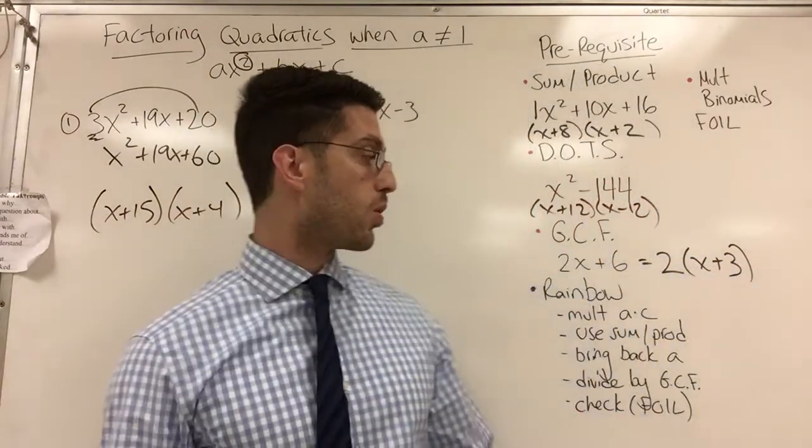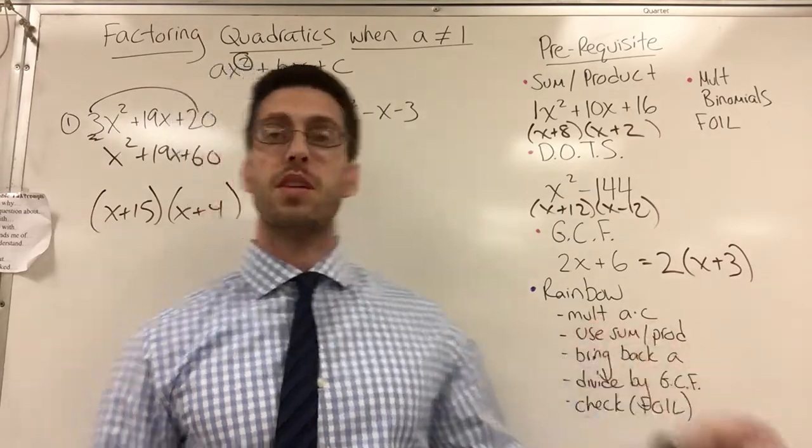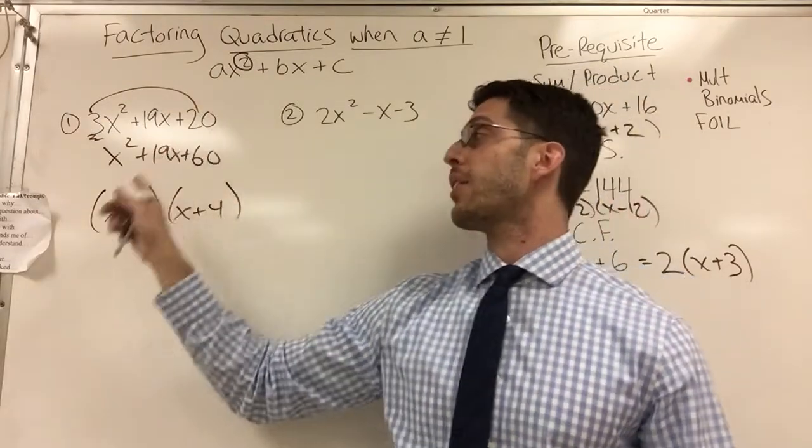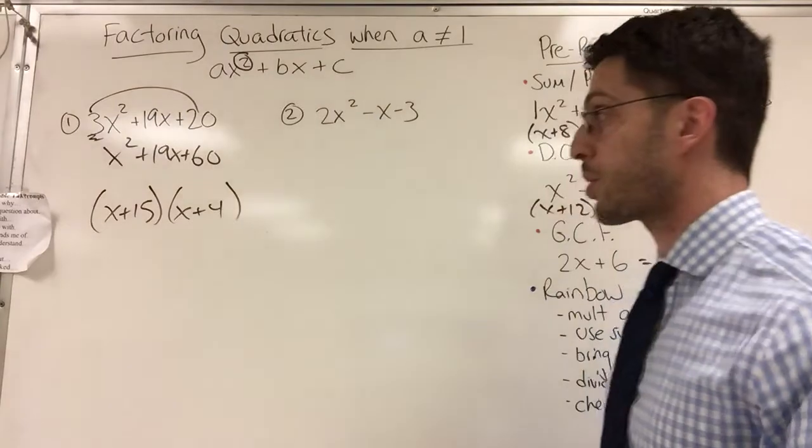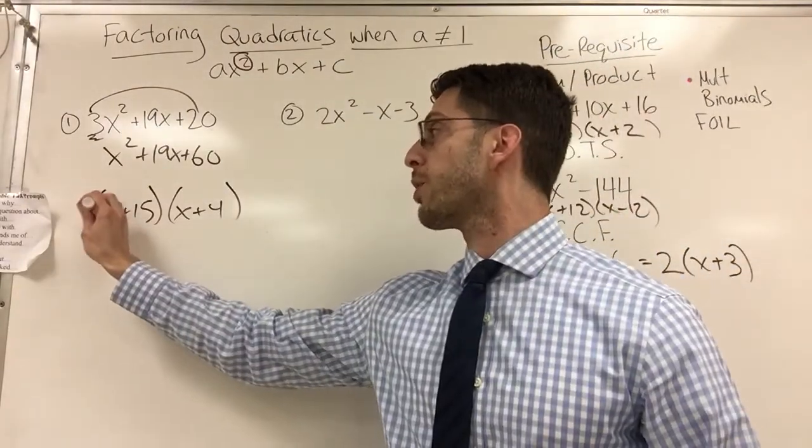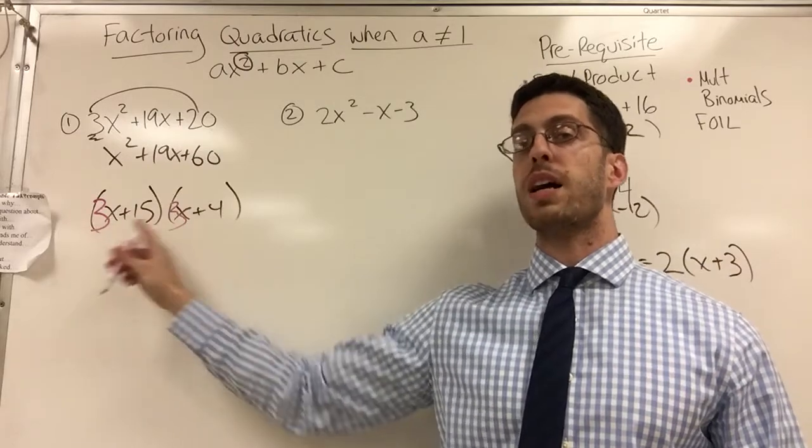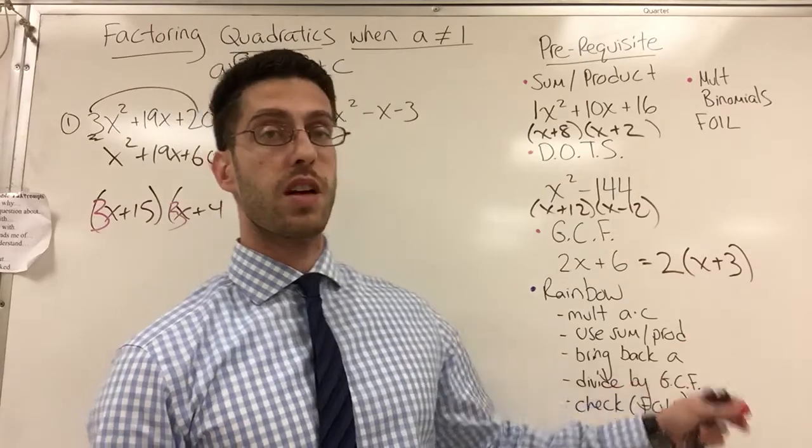Here's the magic of the rainbow. So that a that disappeared comes back. See when I said multiply a times c? This is your a, 3. That's your c, 20. Now the a that disappeared, the 3 that disappeared, comes back. So I'm going to rewrite it here. 3 comes back as the coefficient in both spots. Now, I'm almost done. One more step.